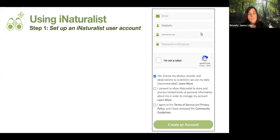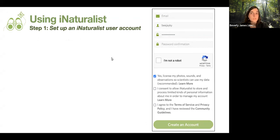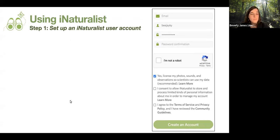If you don't already have an iNaturalist account, that would be the first step. You'll set up an account with your email and choose a username — it doesn't have to be anything close to your real name. The first checkbox is about licensing your photos, sounds, and observations so that scientists can use the data under a non-commercial license. This is recommended so that if your observations become research grade, they'll be made available to the GBIF database — the Global Biodiversity Information Facility — and also for scientists who might want to use your images in a research paper.